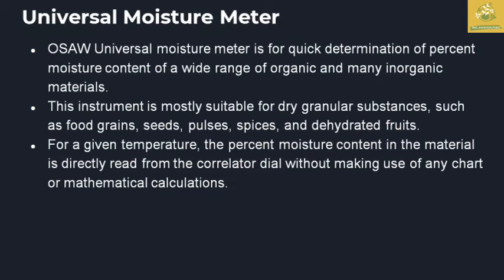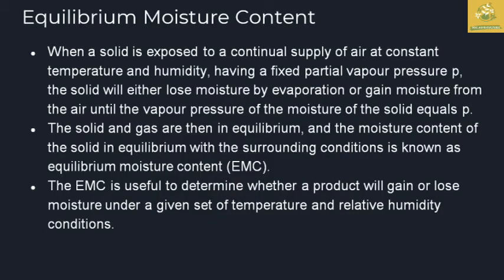The universal moisture meter, also known as the OSAW universal moisture meter, is used for quick determination of moisture percentage across a wide range of organic and many inorganic materials. It is mostly suitable for dry granule substances such as food grains, seeds, pulses, spices, and dehydrated foods. The temperature and moisture percentage in the material is directly read by a correlated dial, eliminating the need for charts or mathematical calculations.